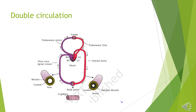Now the topic of double circulation. In our heart, oxygenated blood and deoxygenated blood never meet. Blood pumped by the right ventricle enters the pulmonary artery, while the left ventricle pumps blood into the aorta. Deoxygenated blood from all over the body enters the right atrium, then the right ventricle, and through the pulmonary artery goes to the lungs for oxygenation. Oxygenated blood from the lungs, via the pulmonary vein, enters the left atrium, then the left ventricle, and is pumped to the aorta and the entire body.